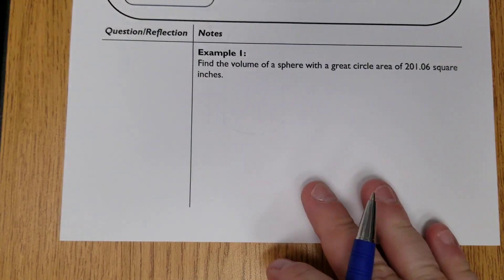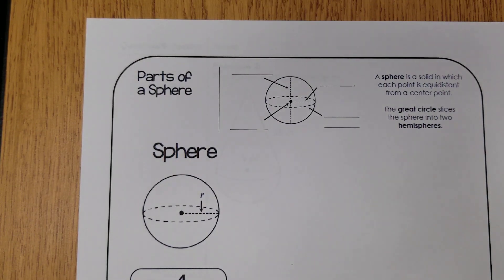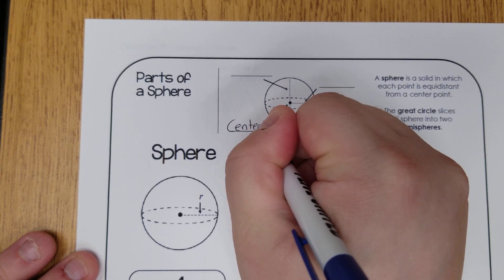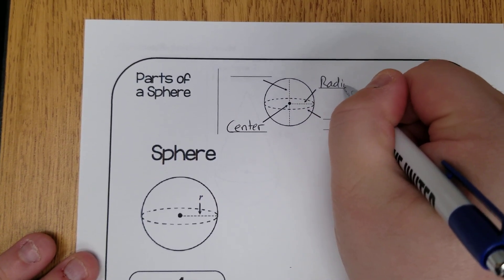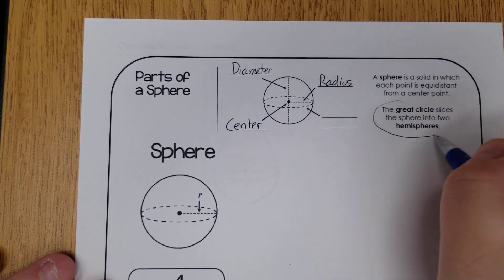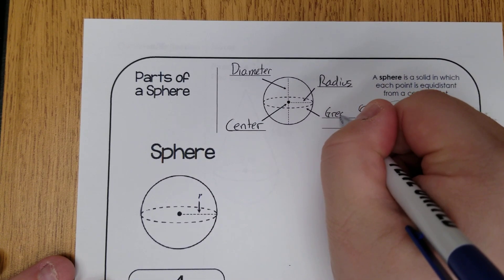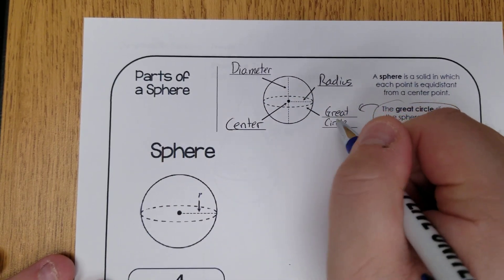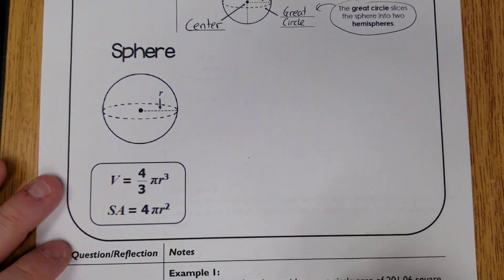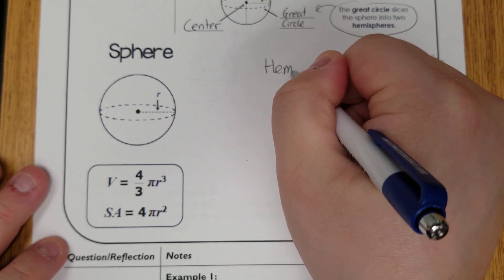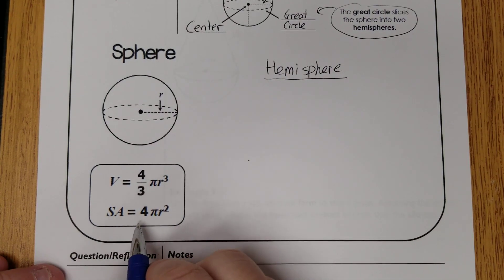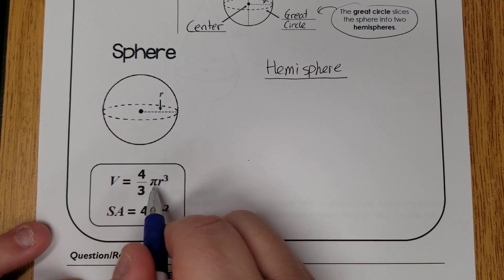The last shape is the sphere. It still follows circle properties: it has a center dot, a radius, and a diameter across the full distance. The new concept is the great circle — the largest circle around the center dot. Since it's 3D, we can draw circles of different sizes depending on where we slice, and cutting the sphere creates hemispheres. For a full sphere, surface area is 4πr² and volume is four-thirds πr cubed.